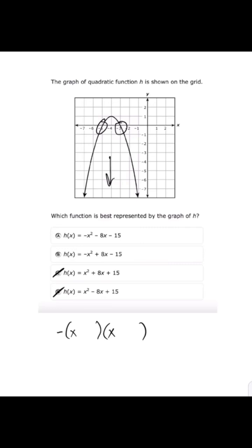So instead of -5 and -3, it's going to be +5 and +3. From here I can use FOIL to multiply out the two sets of parentheses.